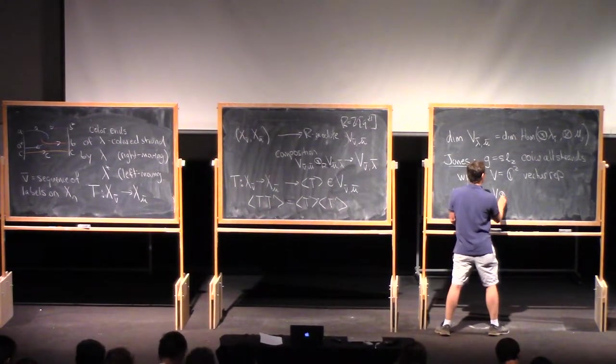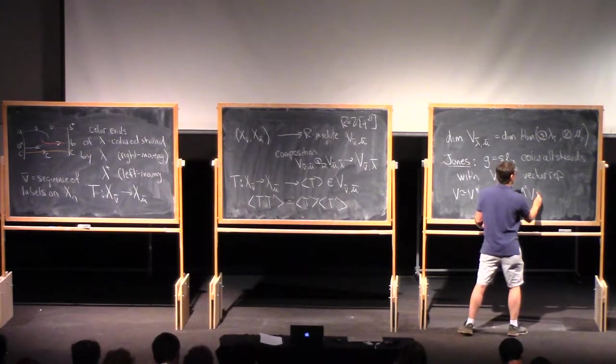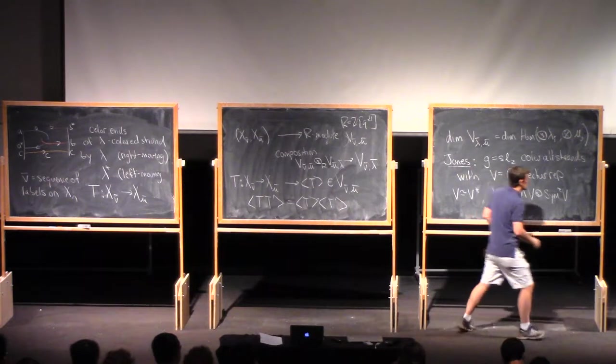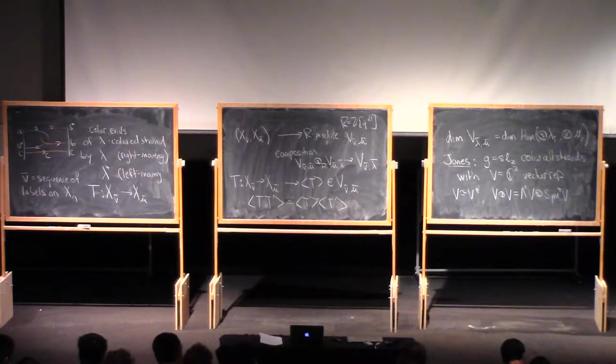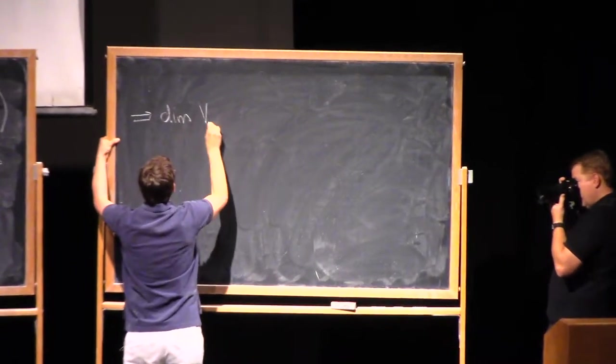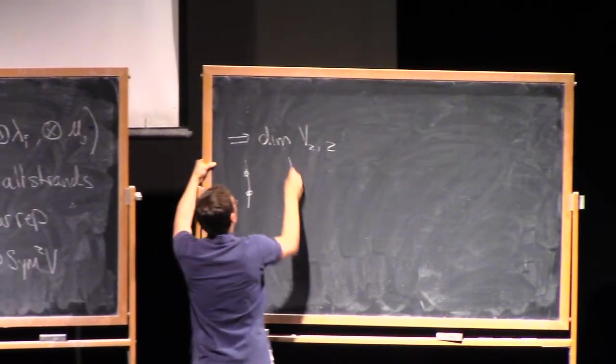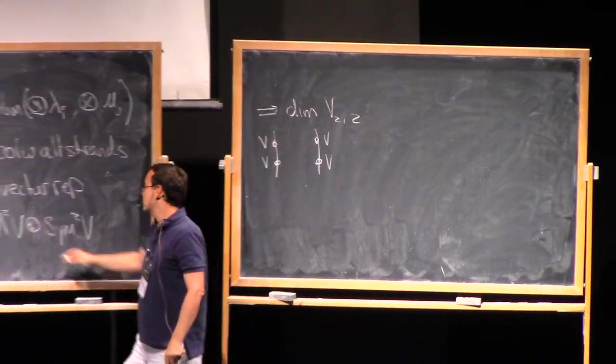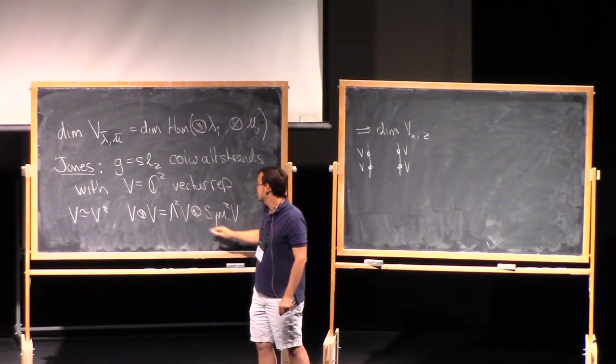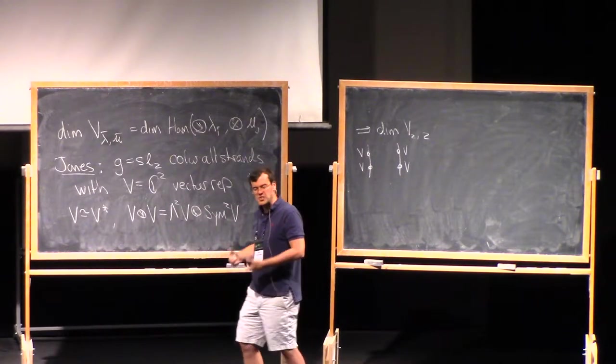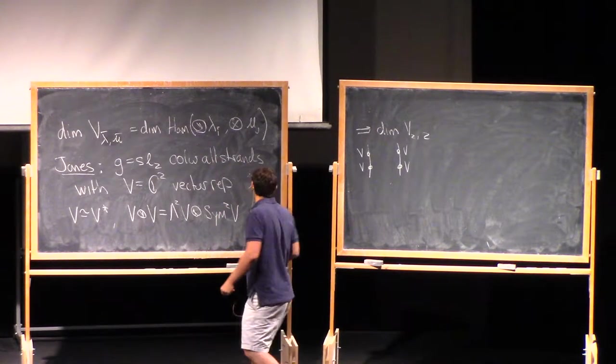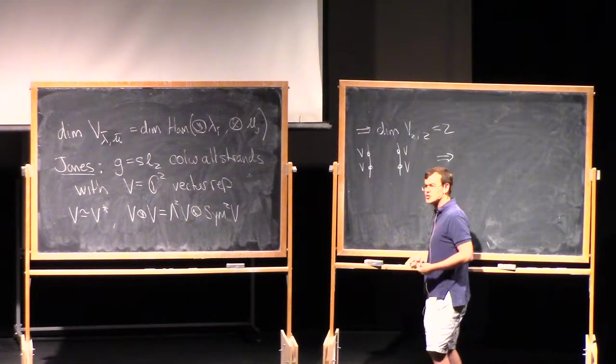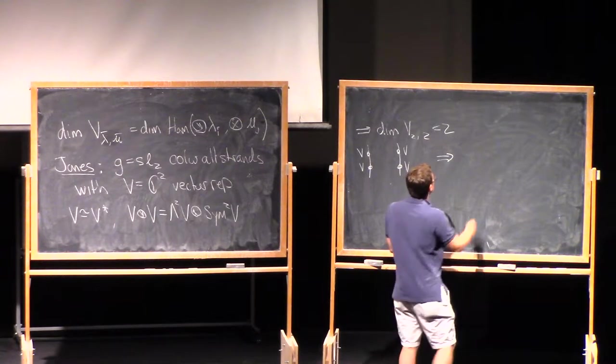And also, if I take v tensor v, that's wedge 2 of v plus sym 2 of v. These are both irreducible. So this says that the dimension of v to 2, so that's sort of things where I have two endpoints on either end colored with v, is the dimension of the space of Homs from this to itself, which is just two-dimensional, right? Because space of Homs from one representation to itself is one-dimensional, and from one representation to another one is zero-dimensional. So this is two.